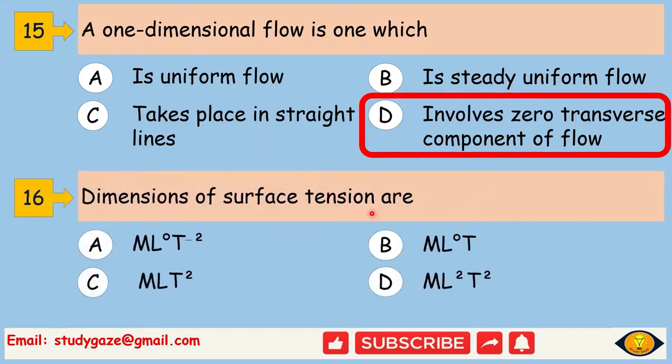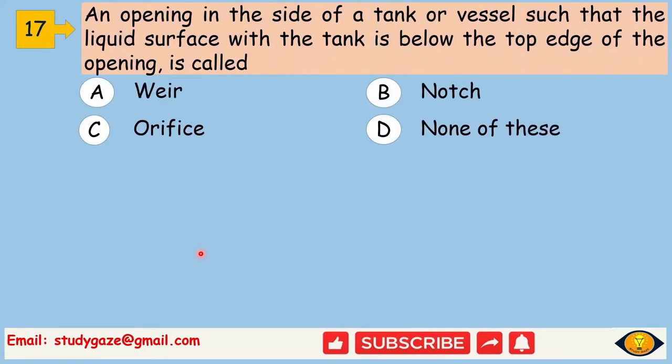Dimensions of surface tension are ML⁰T⁻². An opening in the side of a tank or vessel such that the liquid surface with the tank is below the top edge of the opening is called a notch.